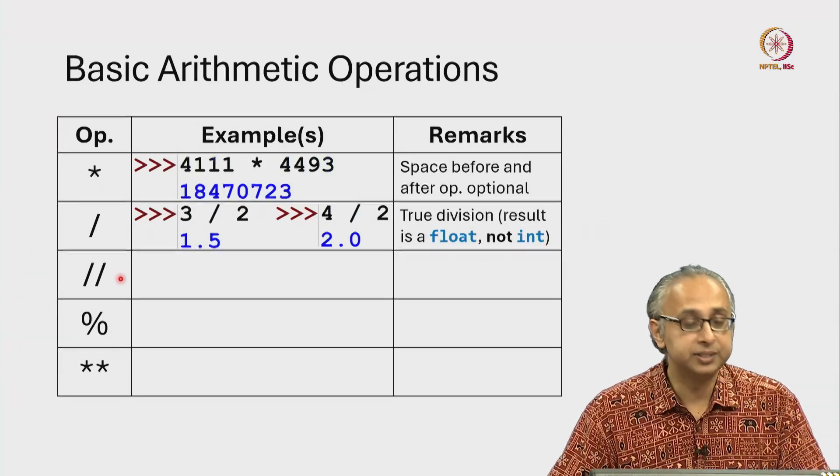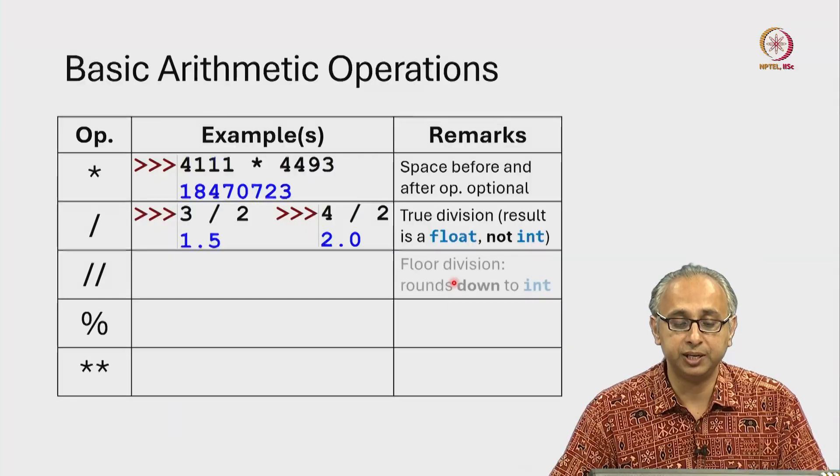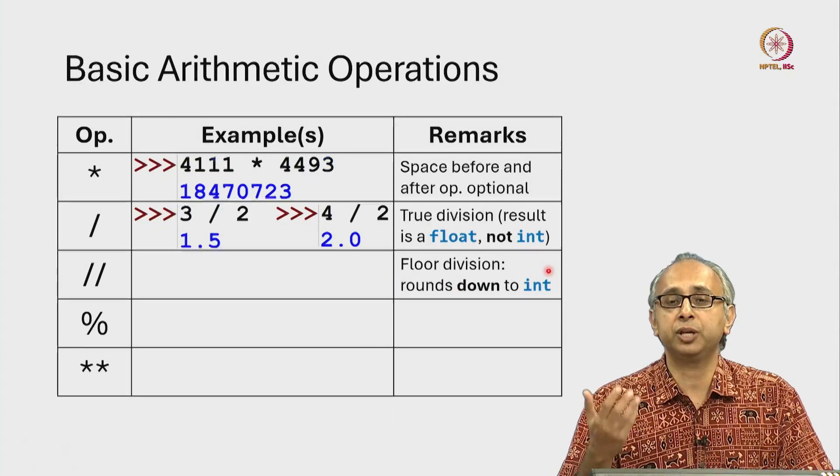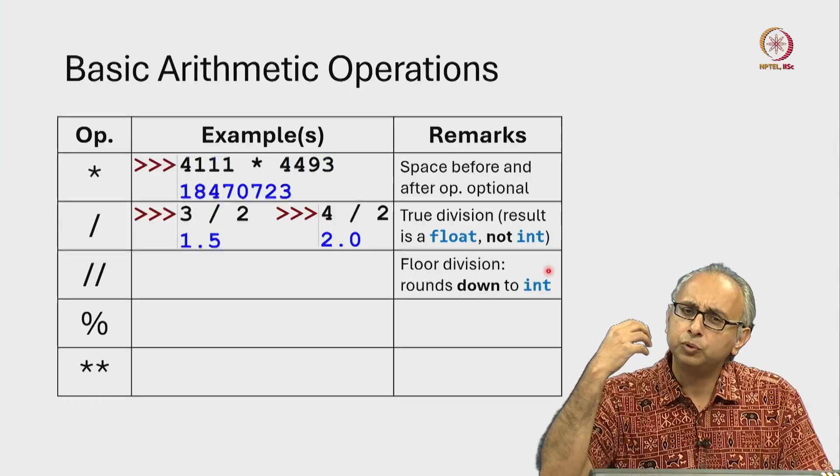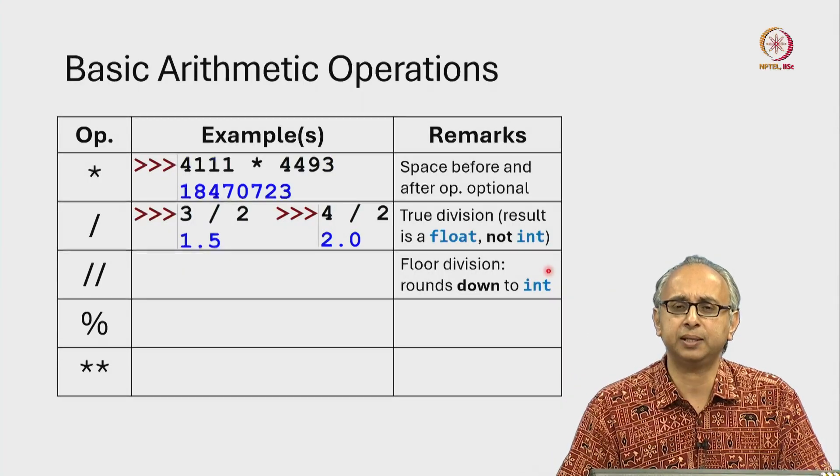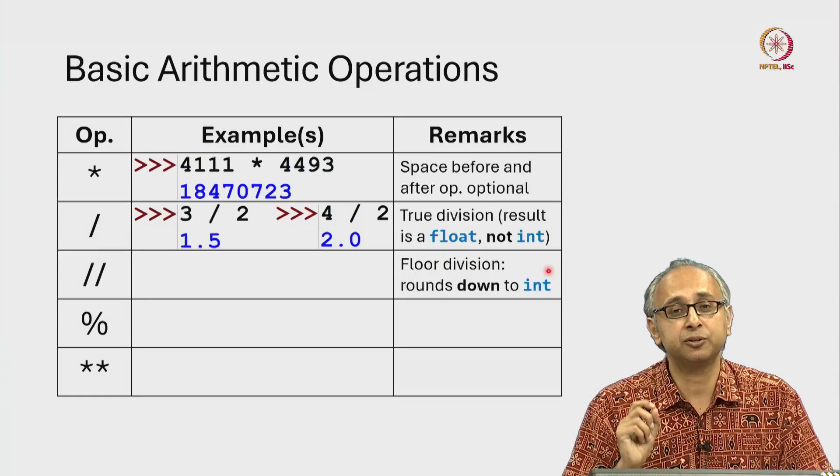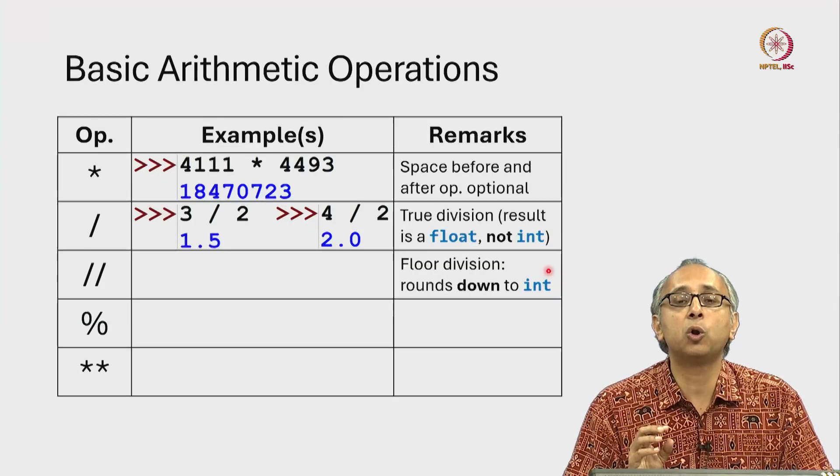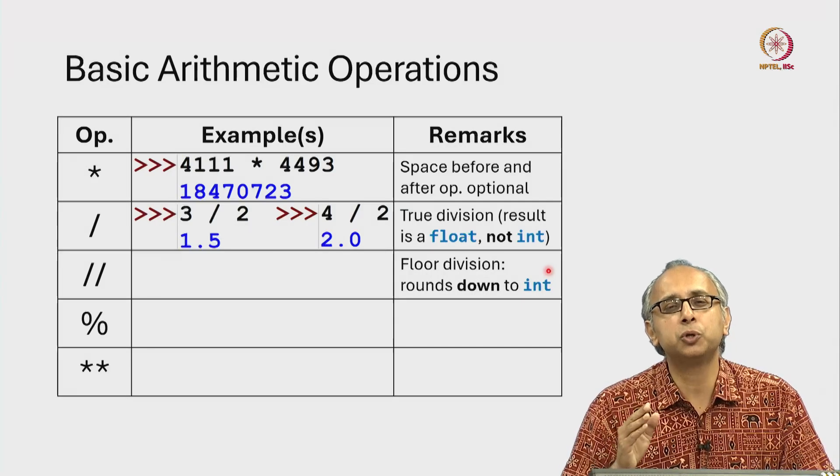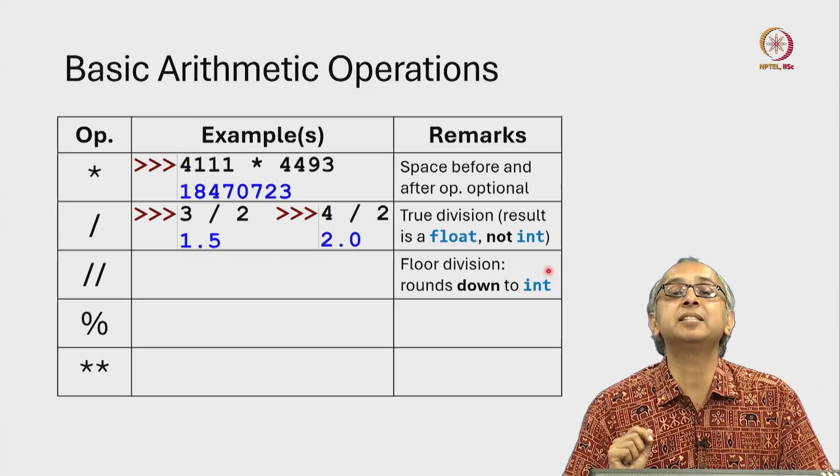Now let's come to this double forward slash which is the floor division operation. So the way to think about floor division is you do your normal division the way you are comfortable in mathematics and if the answer is a fraction, you will always round downwards. Which means you will always go in the direction of minus infinity.